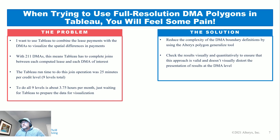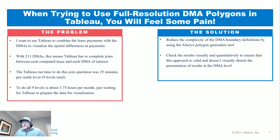When I first encountered that, I knew I had to make a change to speed up the operation. What I did was reduce the complexity of the DMA boundaries through the use of the Alteryx polygon generalize tool, which is probably one of the more underutilized tools in the spatial data set. But just because you use it doesn't mean it's a good solution — I had to check the results visually and quantitatively to make sure things didn't look distorted.